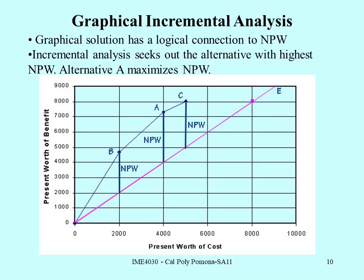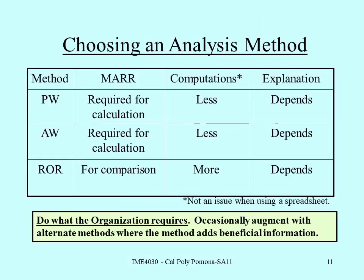Let's summarize and compare our methods so far. Present worth and annual worth analysis use the minimum attractive rate of return to actually calculate the present worths and annual worths. Rate of return analysis doesn't use the MARR to make calculations, but uses it for comparison and for incremental analysis. From a computational standpoint, if you're doing work by hand using factors, present worth and annual worth analysis take fewer computations than rate of return analysis, since rate of return could use a lot of trial and error.